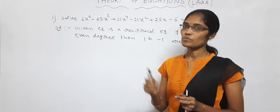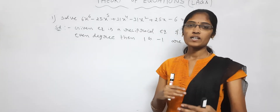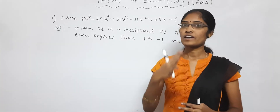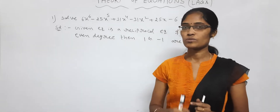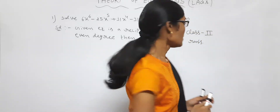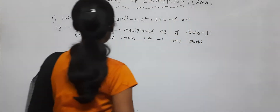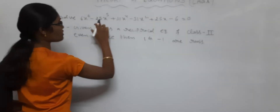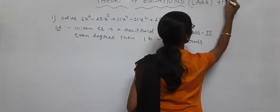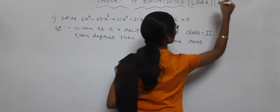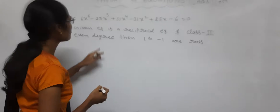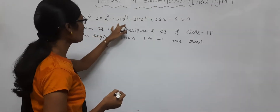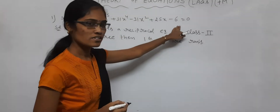Solve 6x power 6 minus 25x power 5 plus 31x power 4. This is a LAQ — 7 marks. Important.